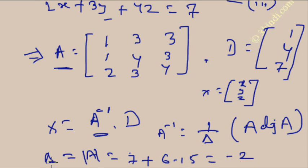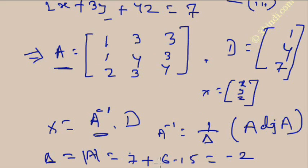To get the value of delta, we calculate the determinant of A: 1 × (16 − 9) − 3 × (4 − 6) + 3 × (3 − 8), which gives 7 + 6 − 15. So delta equals minus 2.